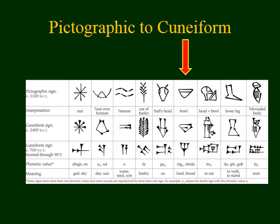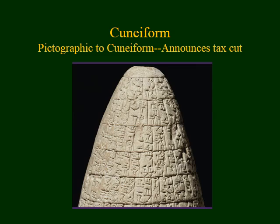Just as English evolves over time and we get new words, the cuneiform language also evolved. Notice where the arrow was pointing in the initial image for a bowl, and then how it evolved over the years. This is an example of a cuneiform text which survives from ancient years — it's announcing a tax cut, placed in public so that people could know that their taxes were actually being changed.